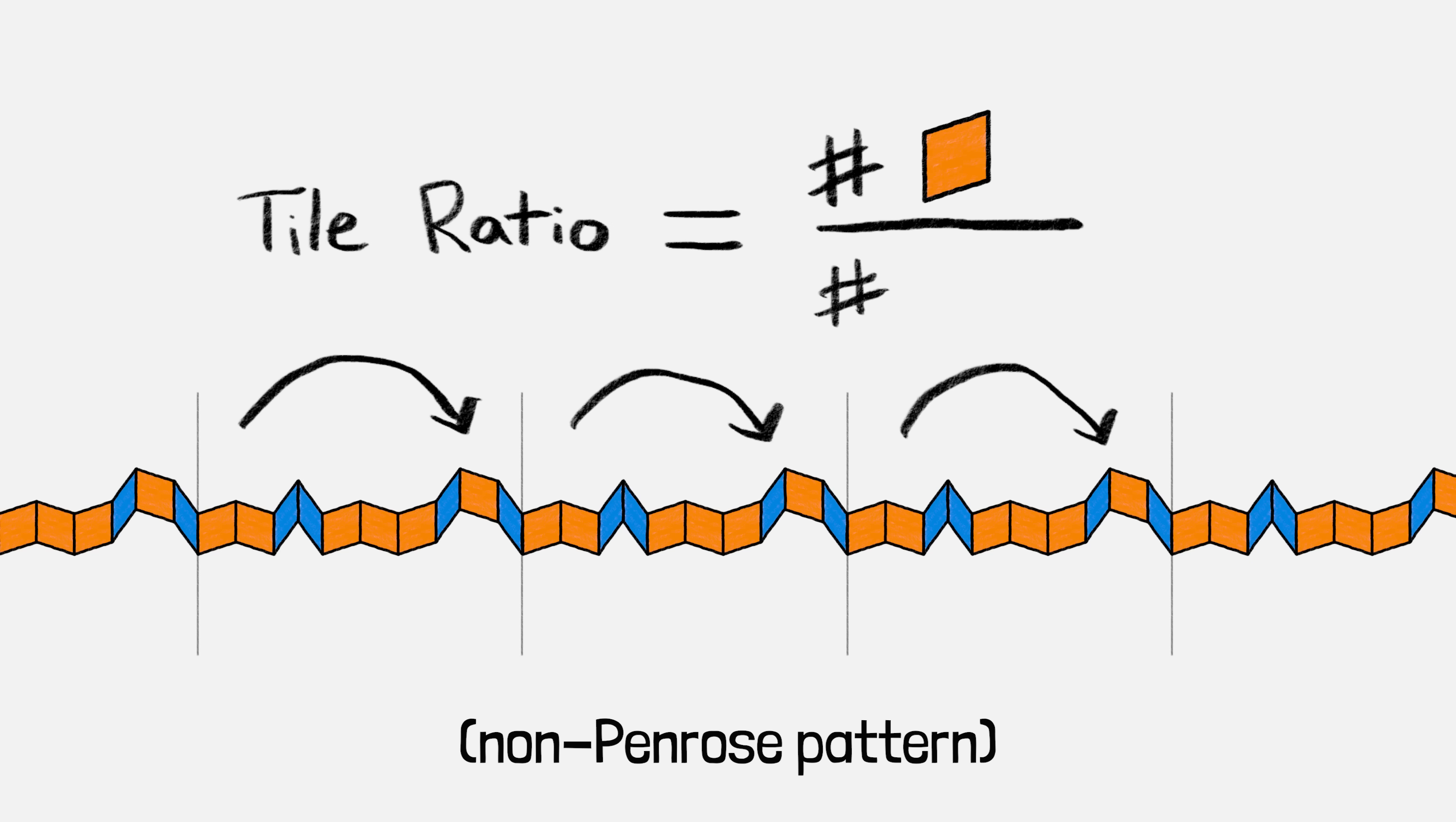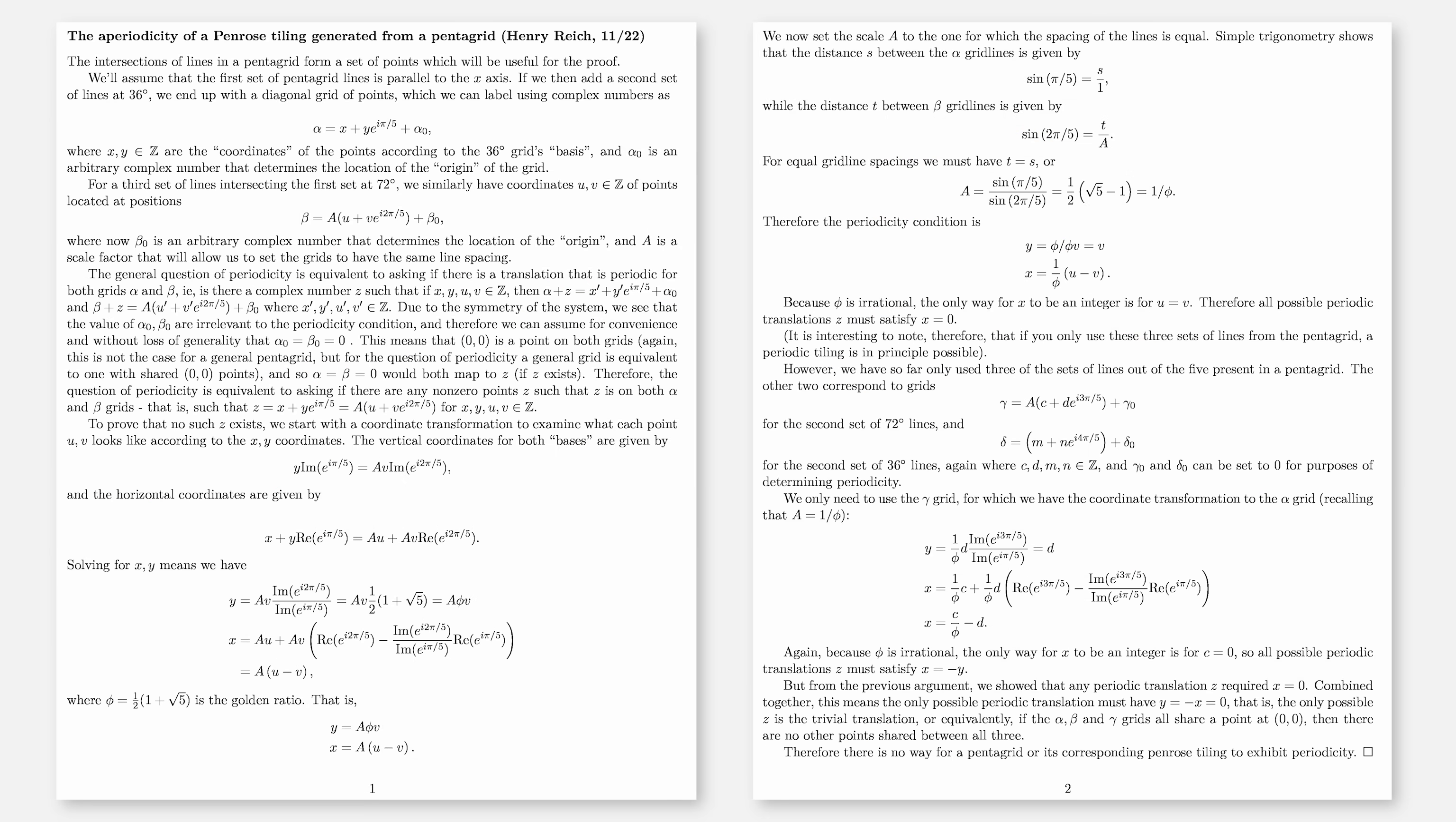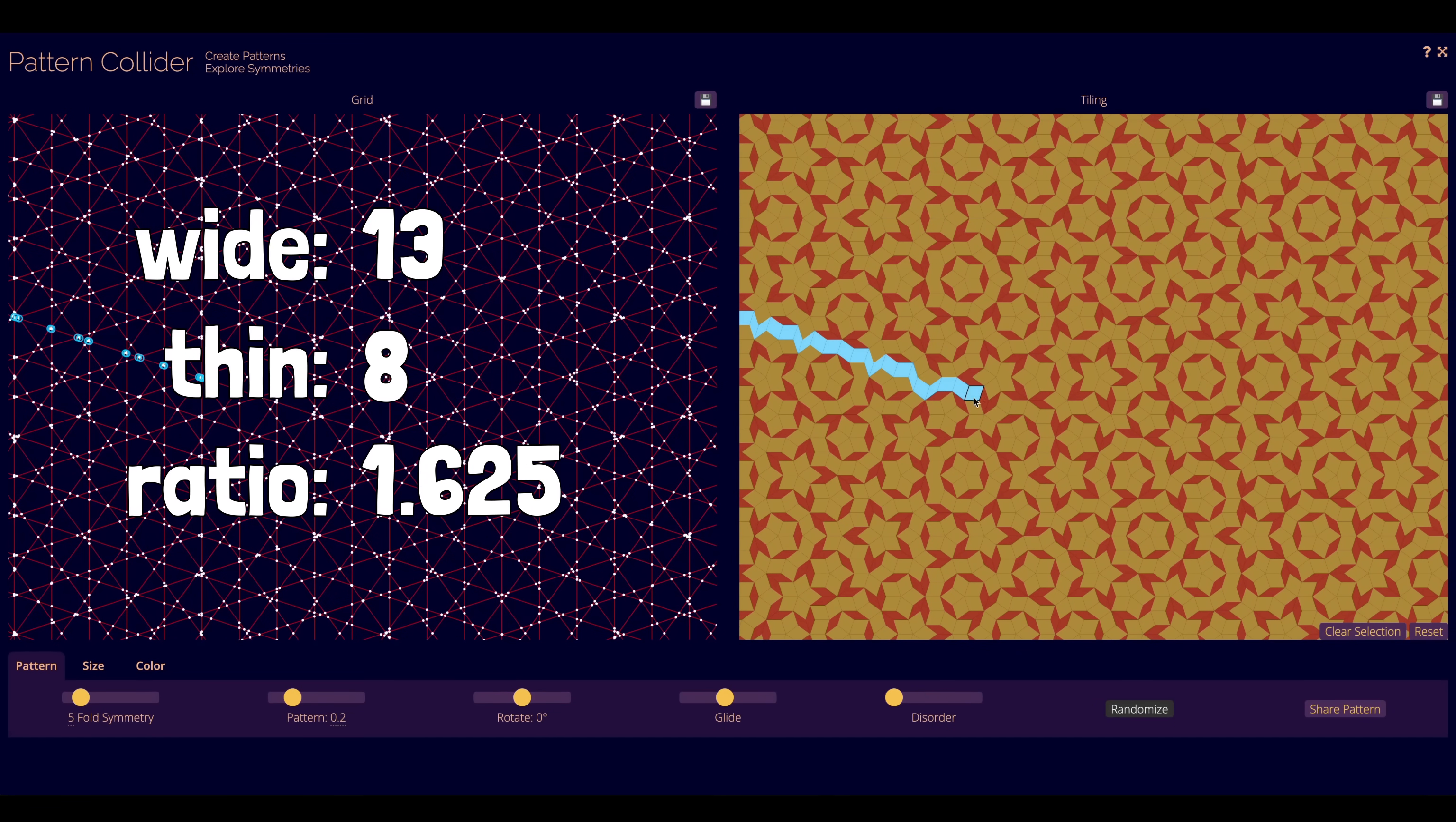Remember, if the pattern did repeat, the ratio of wide to thin tiles would have to be rational, which the golden ratio isn't. Of course, this just proves the tiling can't repeat in one direction. The whole proof is a little bit more than we want to get into here. The pentagrid allows us to directly calculate that as you go out along any ribbon in a Penrose tiling, for every 10 thin tiles you see, there are on average 16.18 wide tiles, a golden ratio worth. And because the golden ratio is irrational,